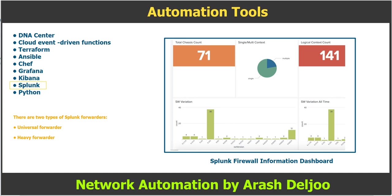The Splunk indexer transforms collected data into events and stores them. The transformations can entail many different operations such as applying timestamps, adding source information, or doing user-defined operations — for example, filtering unwanted logs. The Splunk indexer works with both universal forwarders and heavy forwarders. When working with heavy forwarders, the Splunk indexer only stores the events and does not perform any transformation.